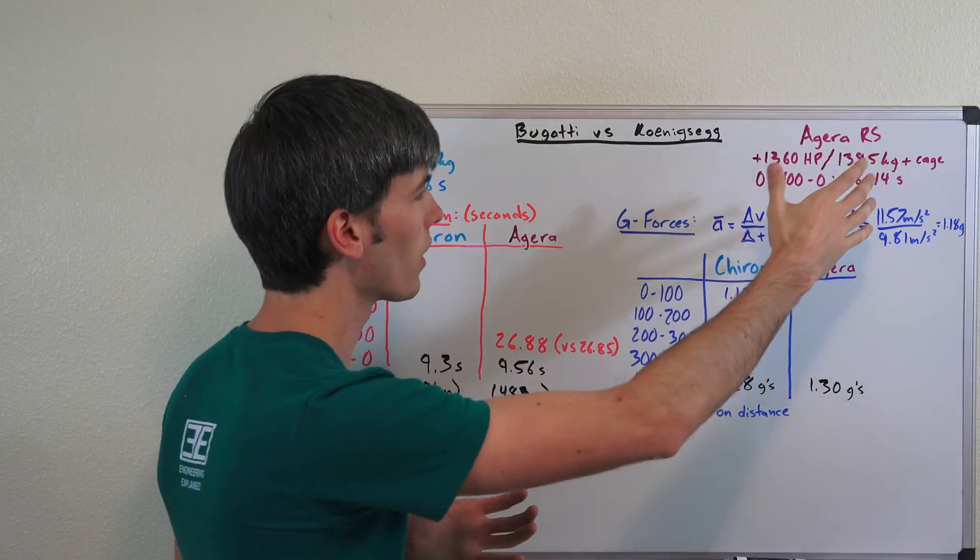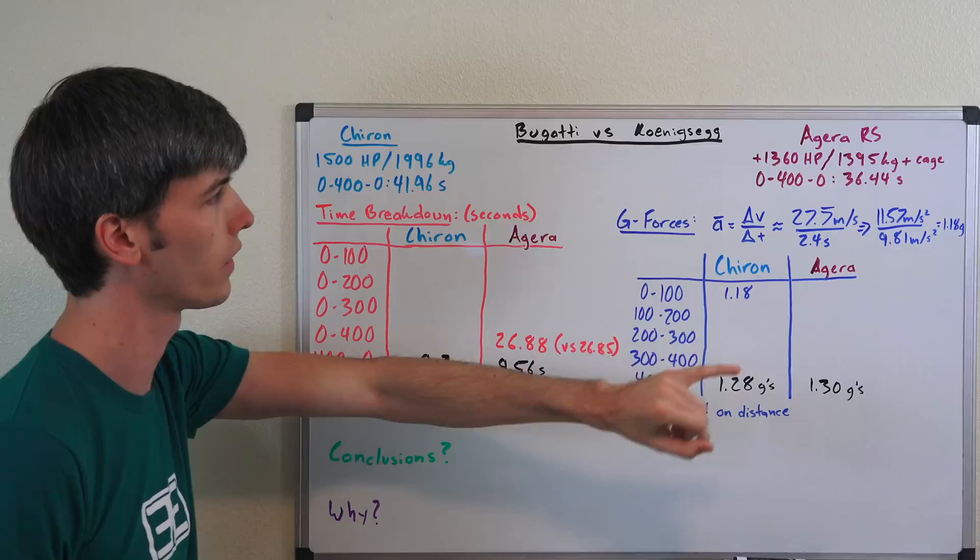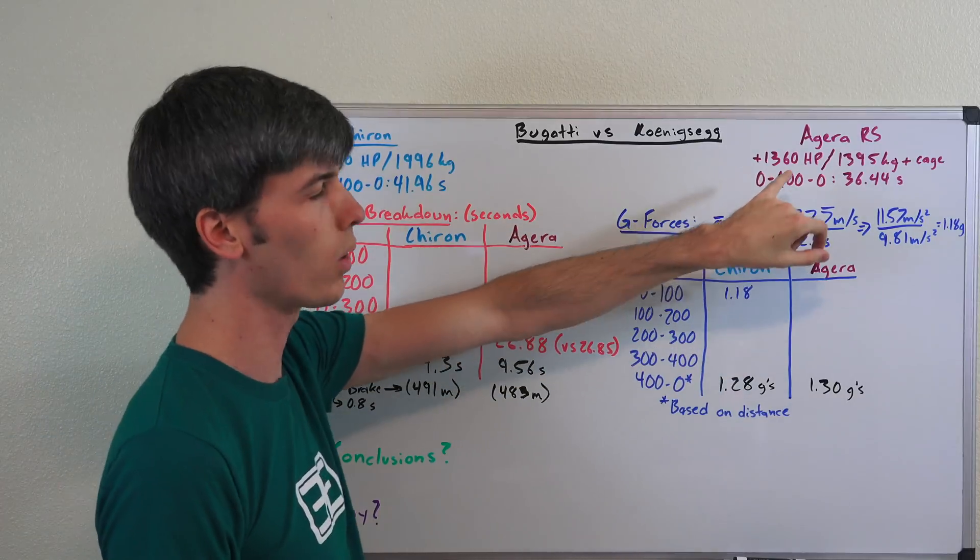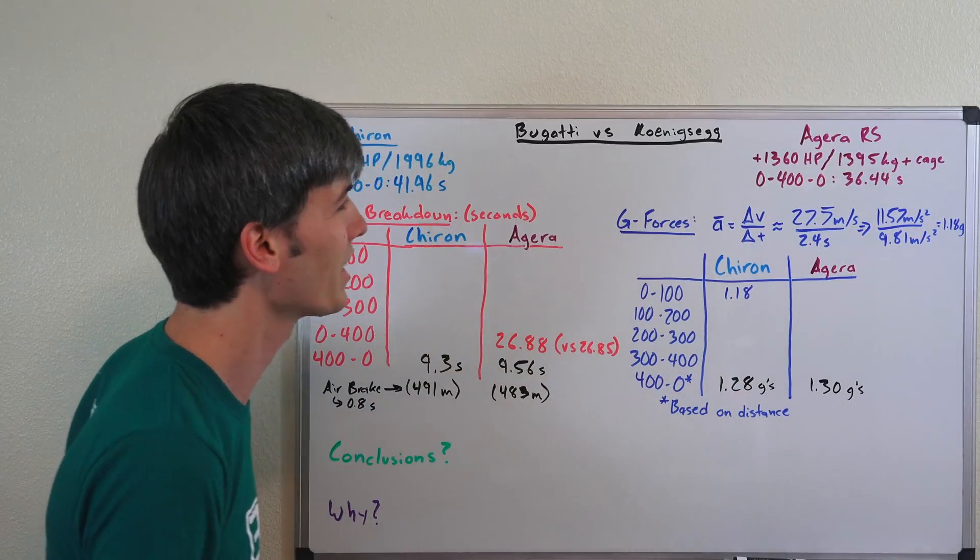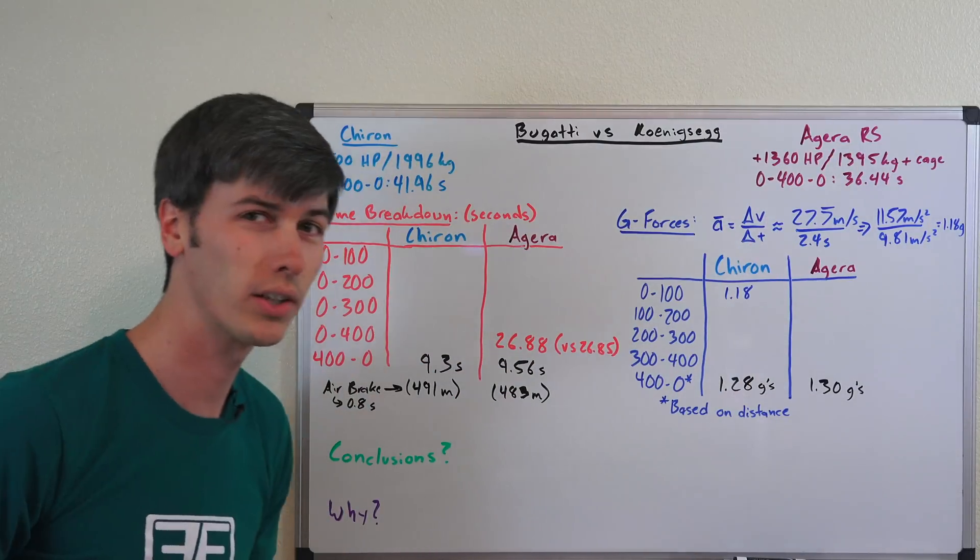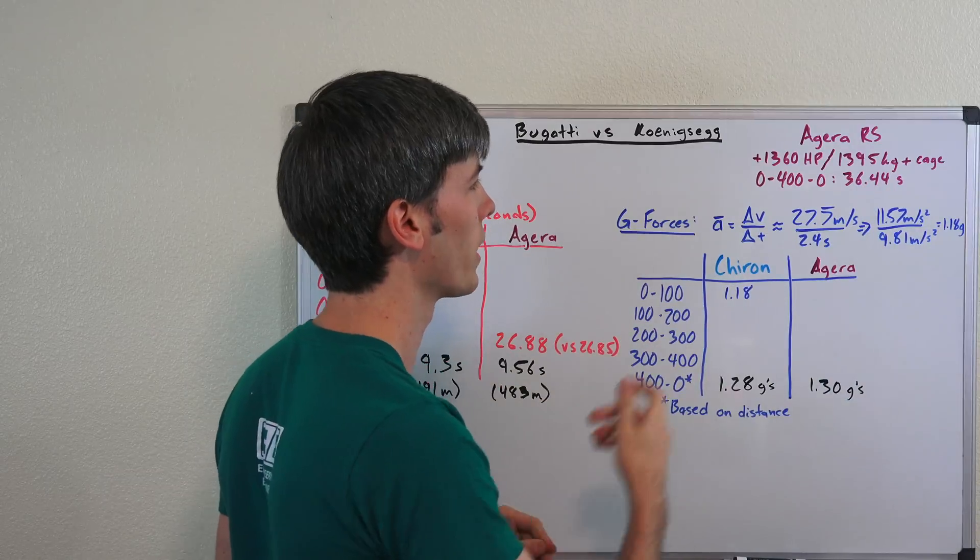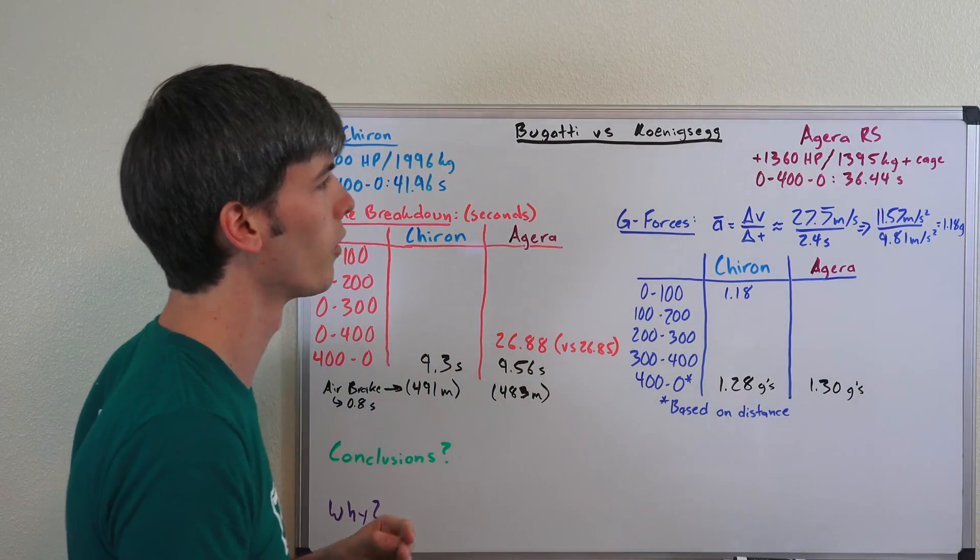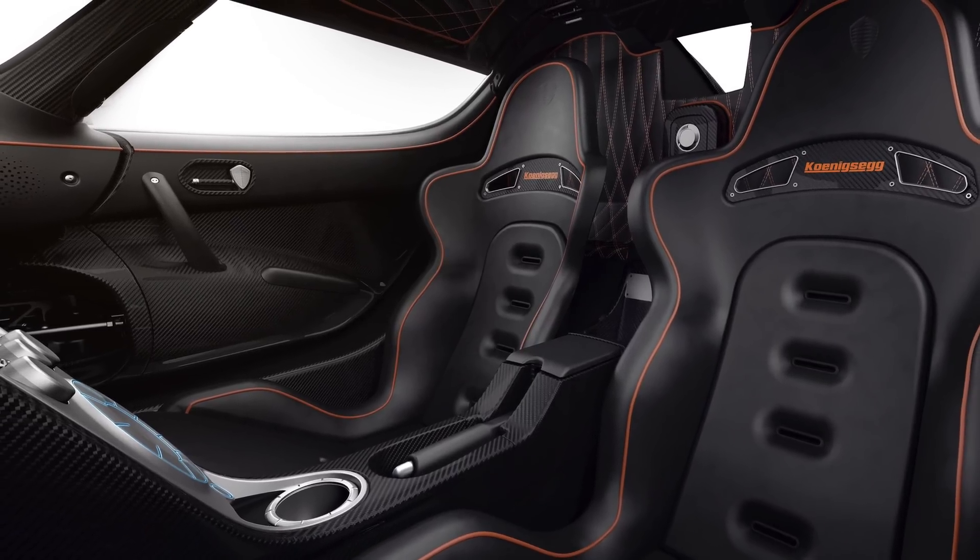The Agera RS was a little bit modified so it does have an upgraded engine. This isn't the base engine that the Agera RS has. It has their 1 megawatt engine in it so 1,360 horsepower. The car only weighs 1395 kilograms, so 600 kilograms less, but it does have a cage in it. That would add a little bit of weight and the cage that they added is removable. They have this light customer option that you can have a cage that's pretty simple to take in and out.